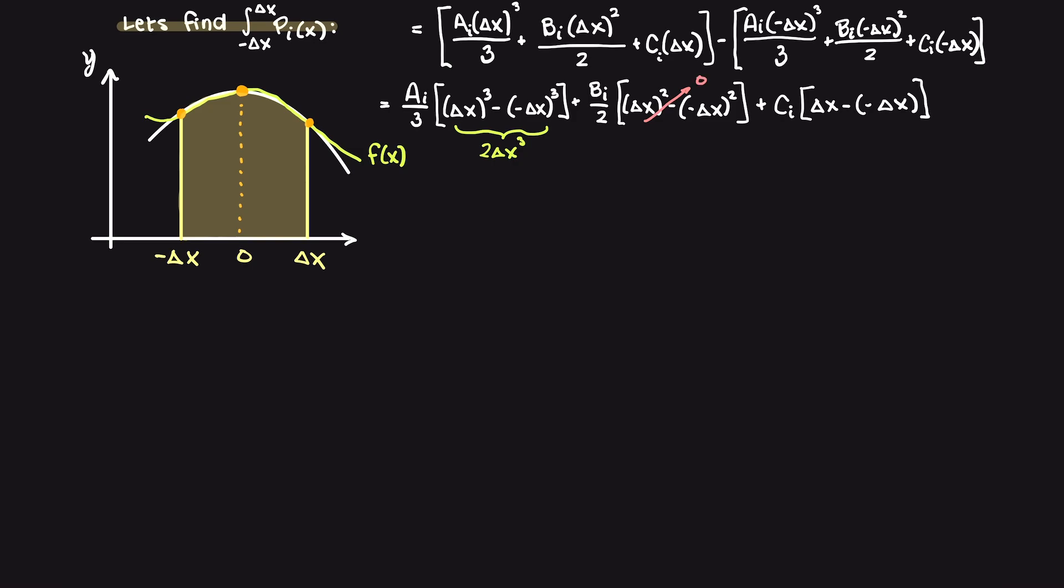For our second term, these two terms eliminate each other as our squared term turns its delta x positive. Like a, our c term also sums to 2 delta x. This leaves us with the following equation, which I'll just call this equation 0, which we will come back to shortly.